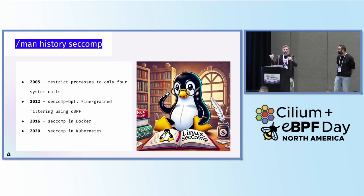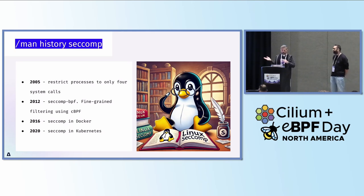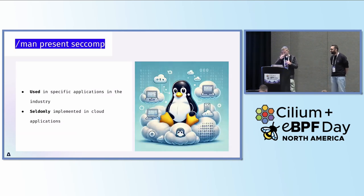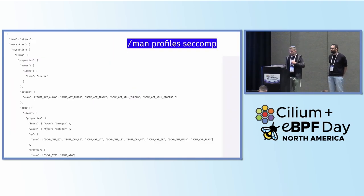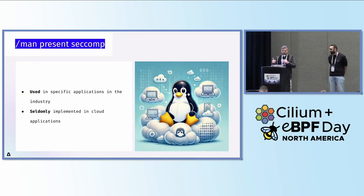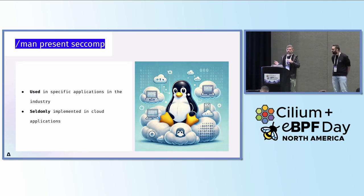In the cloud-native world, Docker started to use seccomp and enabled applying seccomp profiles to containers. Kubernetes also added — not as a first-class citizen, but added — the option to configure seccomp profiles for Kubernetes workloads. Today it is used in very specific use cases, and our general idea was to somehow make seccomp more usable for cloud-native applications, users, and security teams.